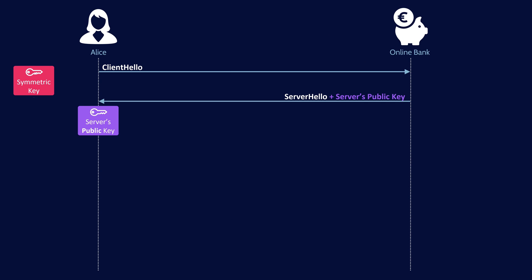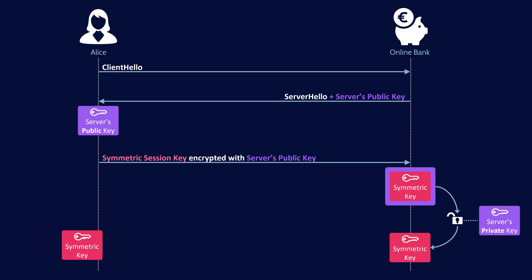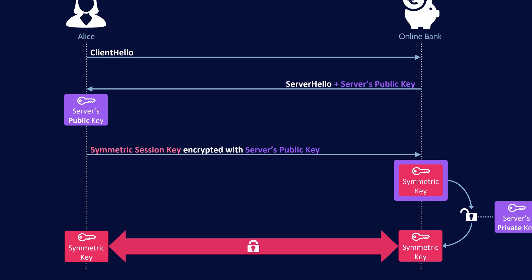To solve this problem, Alice's browser encrypts the symmetric key with the server's public key. Thus, the only system in the world that can decipher the symmetric session key is the server with its private key. Alice's browser sends the encrypted session key over to the server, and the server decrypts it with its private key. Both sides now have the same symmetric key and can switch over to very fast, efficient symmetric cryptography.